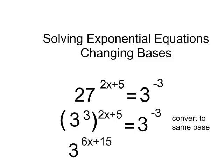Now here's what happens to my left hand side. You'll notice that I have to use the distributive property here to get 6x plus 15, and that is equal to 3 to the exponent negative 3. Now I have the same base.